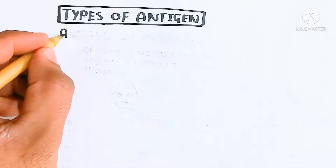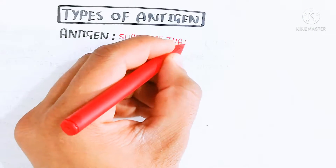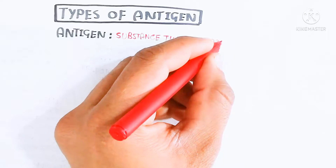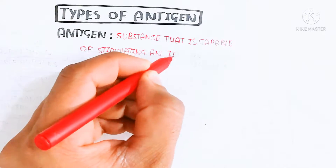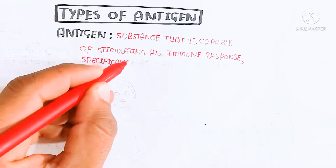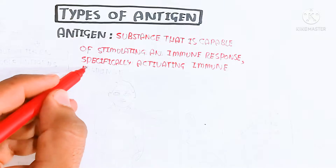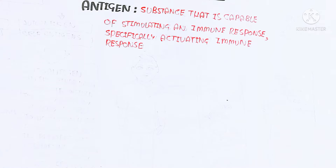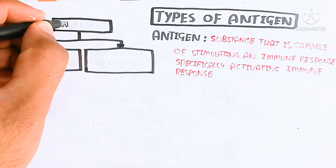In this video we will discuss the types of antigen. An antigen is a substance that is capable of stimulating an immune response, specifically activating it. The antigen can be a foreign substance that causes disease or allergy in our body. In response to an antigen, the lymphocytes — white blood cells — will respond by combating and fighting against the antigen to clear it from our body.